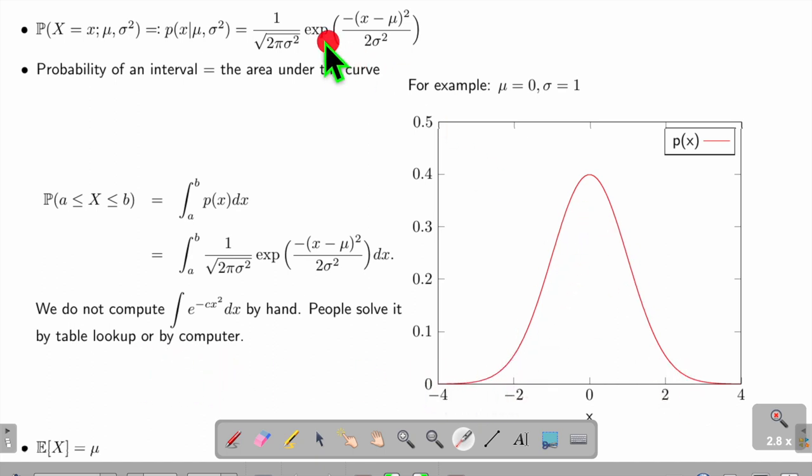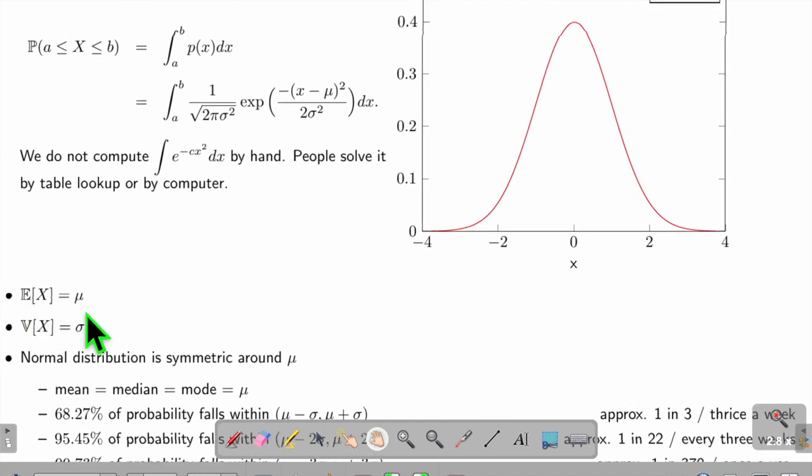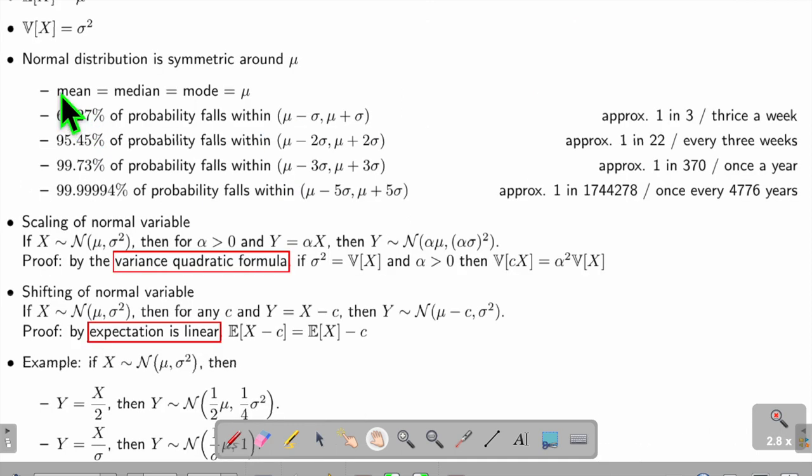If you plot the curve of this function with μ = 0 and variance 1 (called zero mean unit variance), it looks like this—called a bell curve. The expected value of this distribution gives us μ, and the variance gives us σ². The mean of the normal distribution is the same as the median, the mode, and μ.